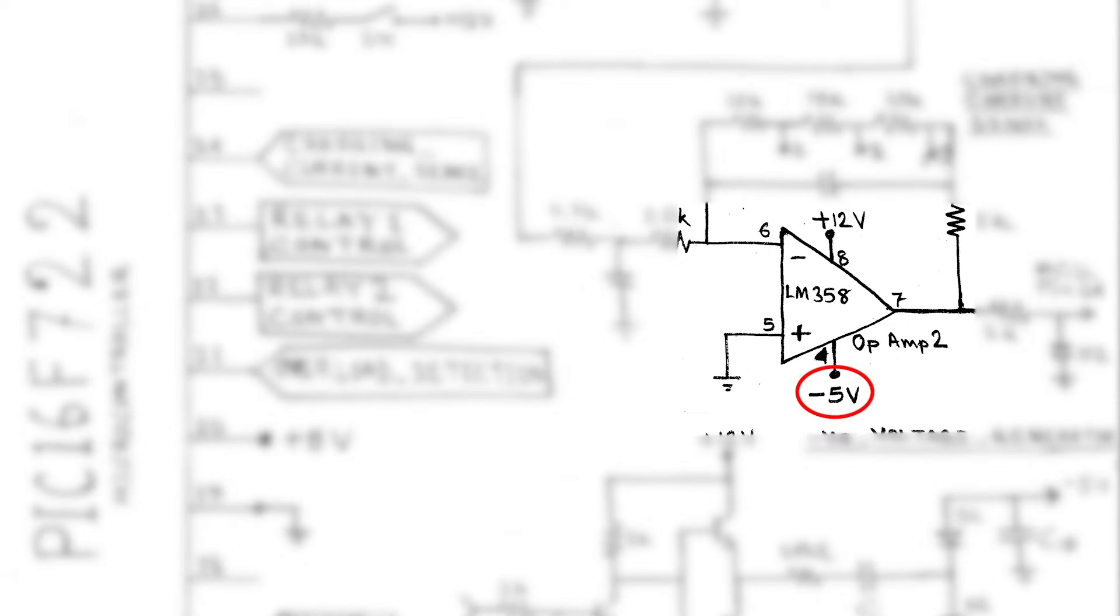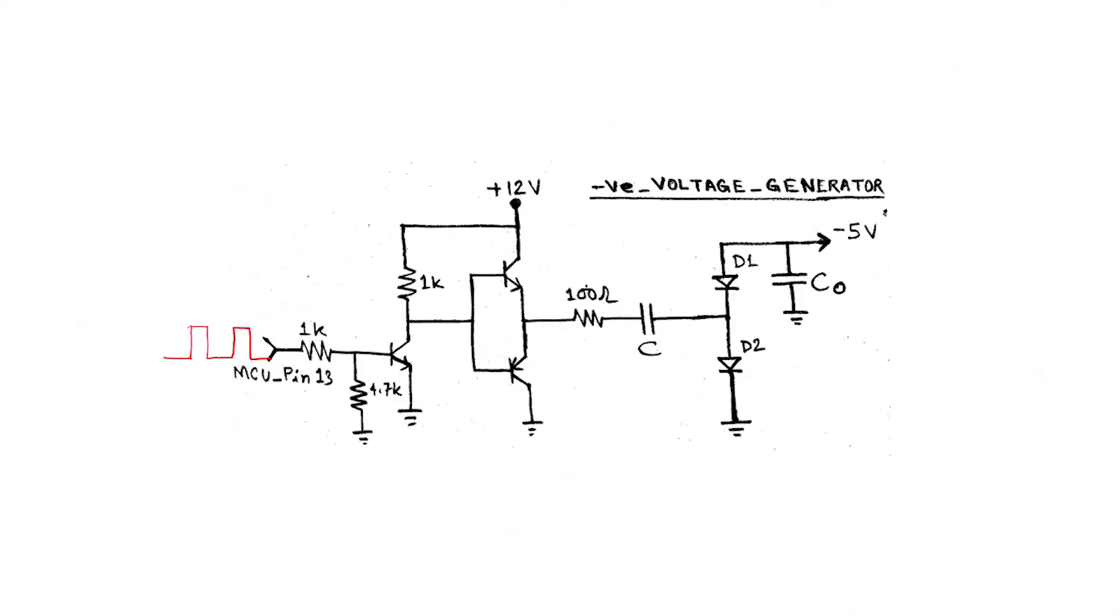One more interesting thing I found, which I didn't see in the other inverters I studied so far, and that is it provides a negative supply voltage in the VEE pin of the LM358 operational amplifier IC, and it generates this negative voltage using this very simple circuit. Pin 13 of microcontroller provides a 20 kilohertz PWM signal which drives these two transistors in push-pull configuration. When the upper transistor is on, the capacitor C is charged with the polarity as shown here. And conversely, when the lower transistor is on, the positive terminal of the capacitor C is tied to ground. At this moment, the opposite terminal of C is negative with respect to the ground, and this negative charge of the capacitor C is stored in the C0 capacitor via the diode D1. That's how the LM358 gets its negative supply voltage.